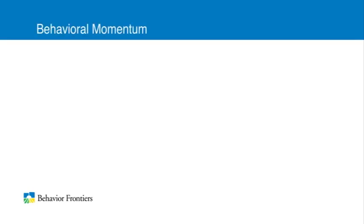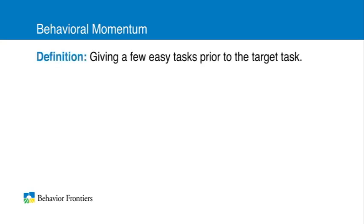Next, we'll go over the antecedent intervention of behavioral momentum, which is also called a high probability request sequence. The definition of behavioral momentum is giving a few easy tasks prior to the target task.